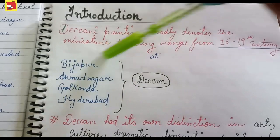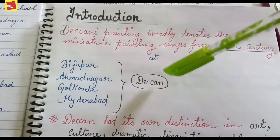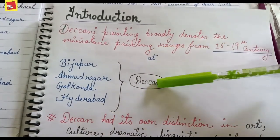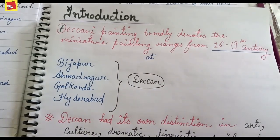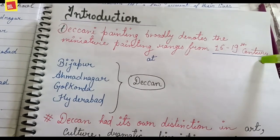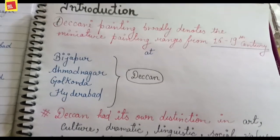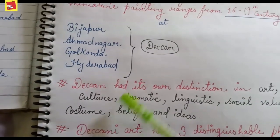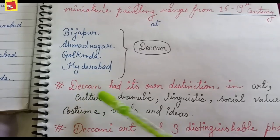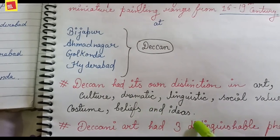Deccan Islamic paintings indicate a painting style which existed only within a limited time frame — during its development in the 16th to 19th century. Deccan has its own distinction in art, culture, drama, linguistics, social values, costumes, beliefs and ideas.